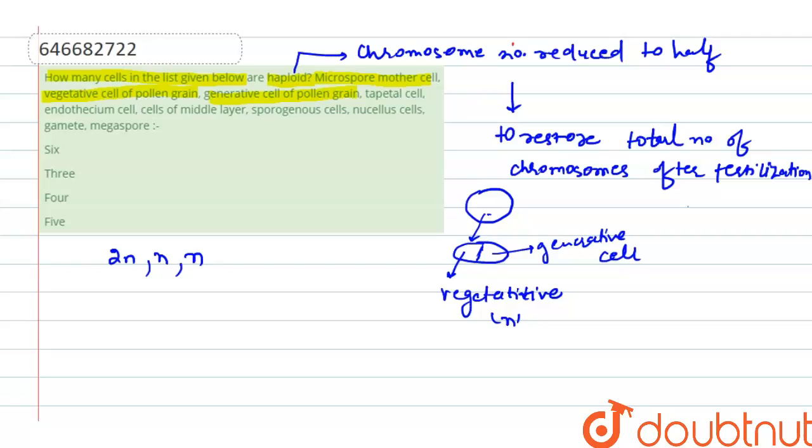Let's move to our another option, which is tapetal cell. These are the cells of tapetum from which tissue our cell gains its nutrition, and it is diploid in nature, so it will be 2n. Next option